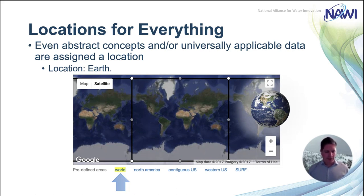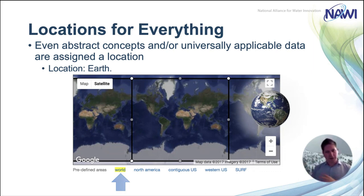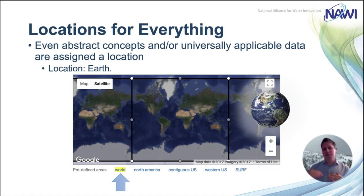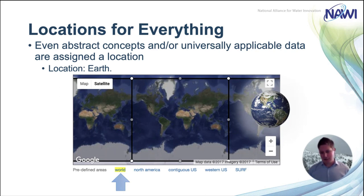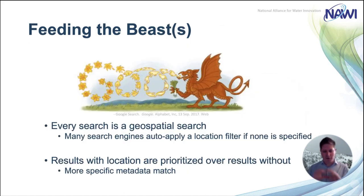Having a location for everything increases search results and relevance across those data sharing network sites, especially for geospatial searches. For example, if I'm looking for data in Colorado and I draw a box around Colorado, those tools are smart enough to say: this data set is relevant to the entire world, therefore it's relevant to Colorado. That provides critical metadata to increase the relevancy of that data set in search results. If I don't supply that information, the machines behind these search algorithms don't necessarily know whether the data is relevant, and it shows up lower in results. It's all about feeding the beast to make sure we have all the metadata out there to make our data discoverable.